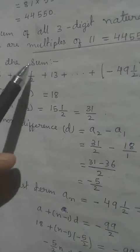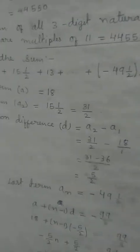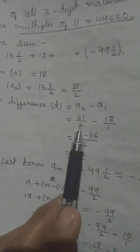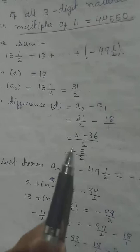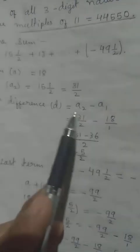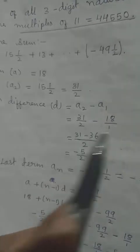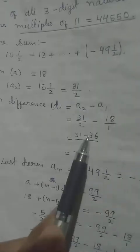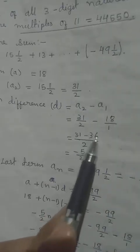We have a mixed fraction — convert it to an improper fraction: 2 × 15 = 30, then 30 + 1 = 31, giving 31/2. To find the common difference, find the LCM: the common difference works out to −5/2.